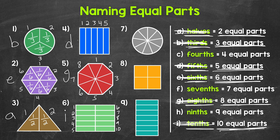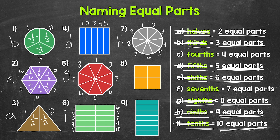Taking a look at number 7, we have a circle — that's our whole — and this circle has been divided into 1, 2, 3, 4, 5, 6, 7, 8, 9 equal parts. We call 9 equal parts ninths. So let's put an H next to number 7 and cross off ninths. Each one of those equal parts is 1 ninth of the whole circle.